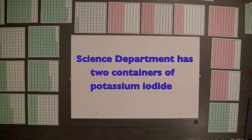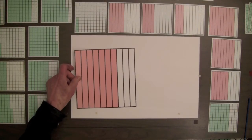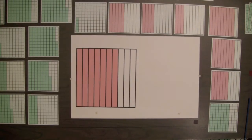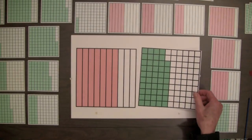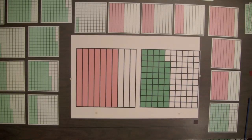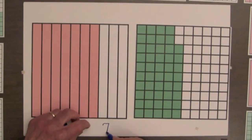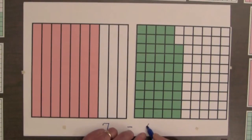If a school science department has two containers of potassium iodide — one containing seven tenths of a quart and the other containing forty-eight hundredths of a quart — what is the difference in these amounts? To determine seven tenths minus forty-eight hundredths, we compare the shaded amounts.